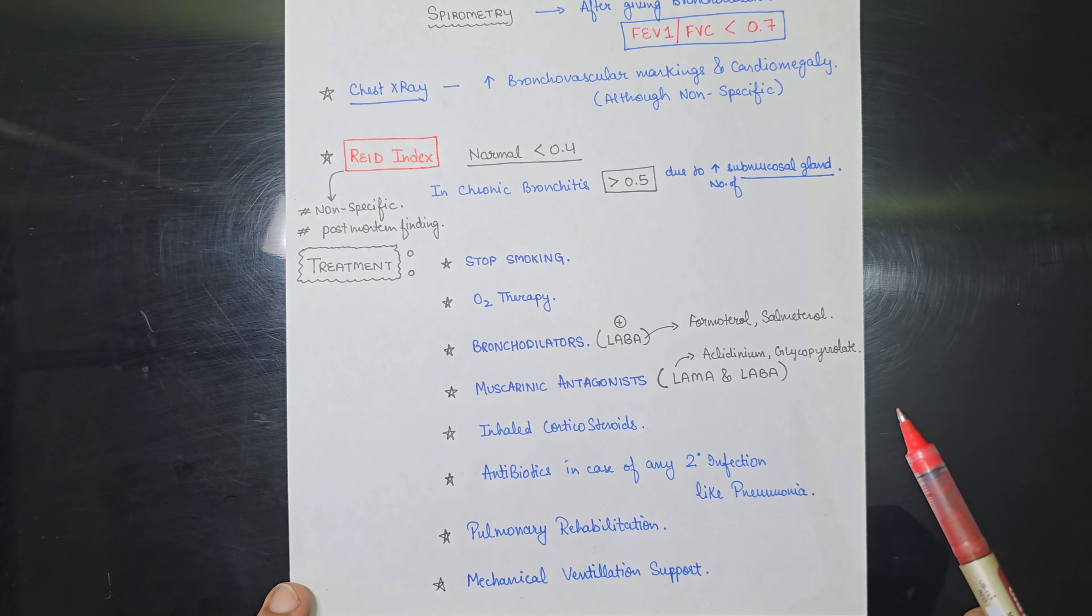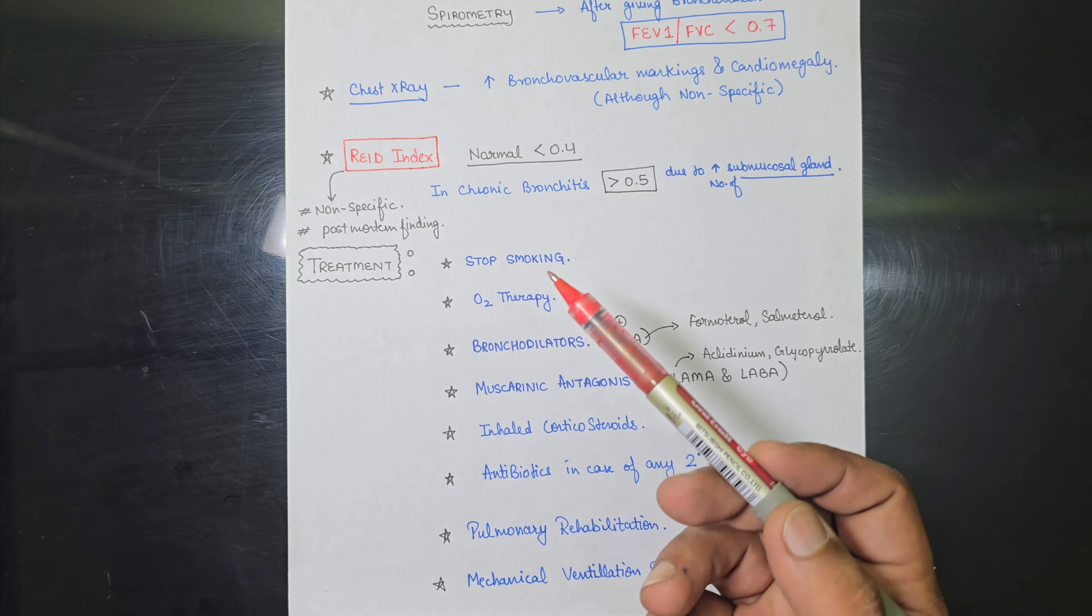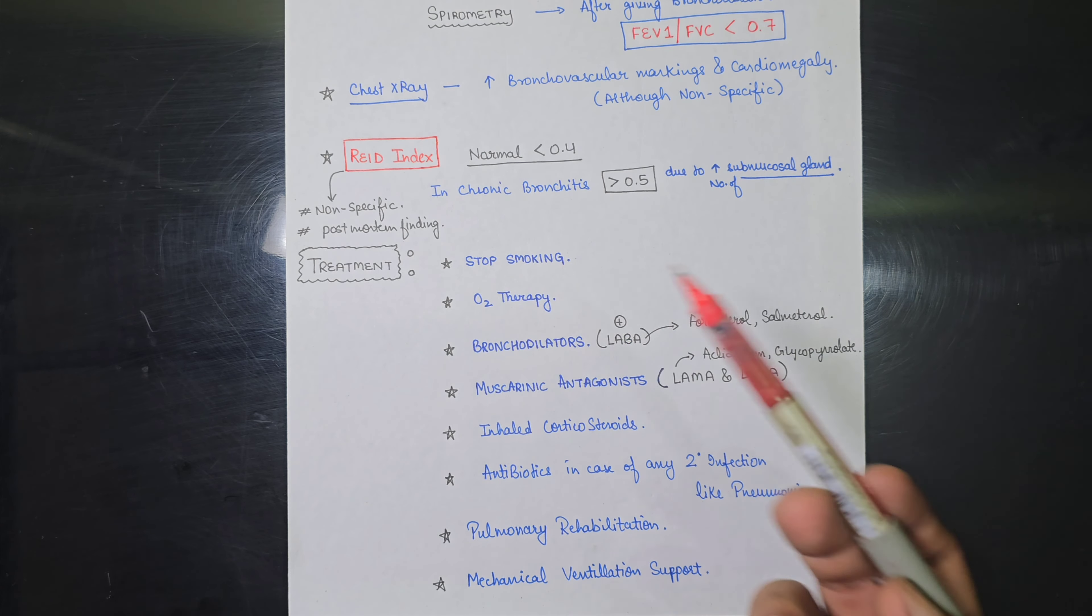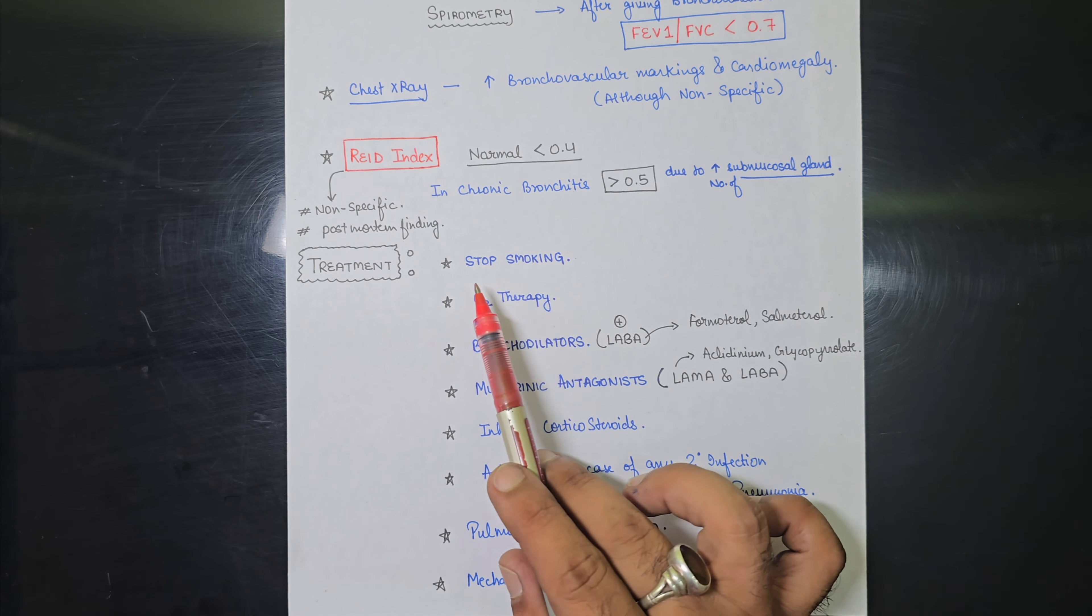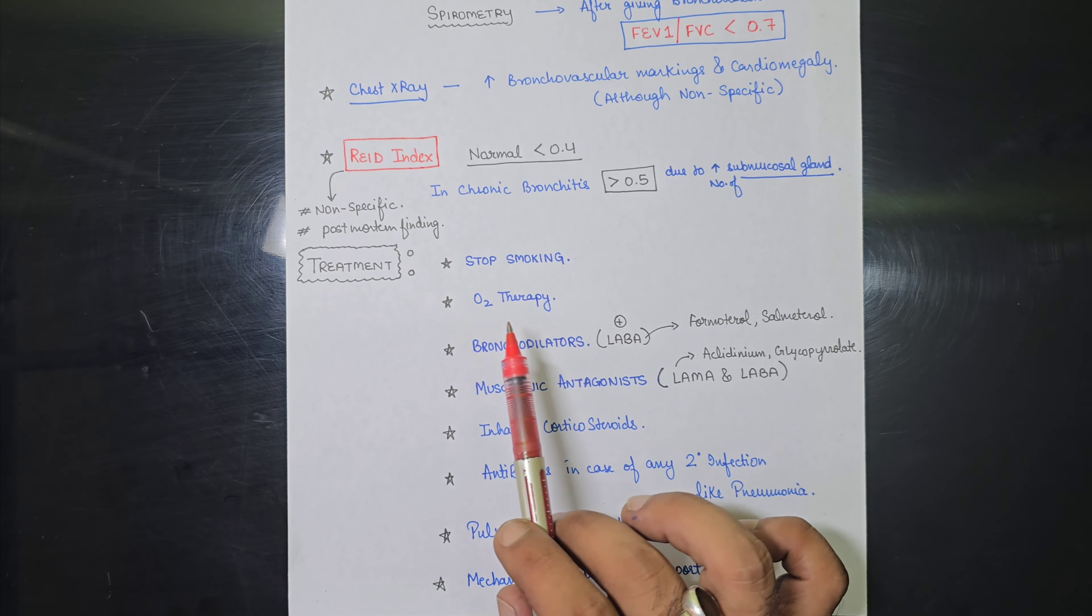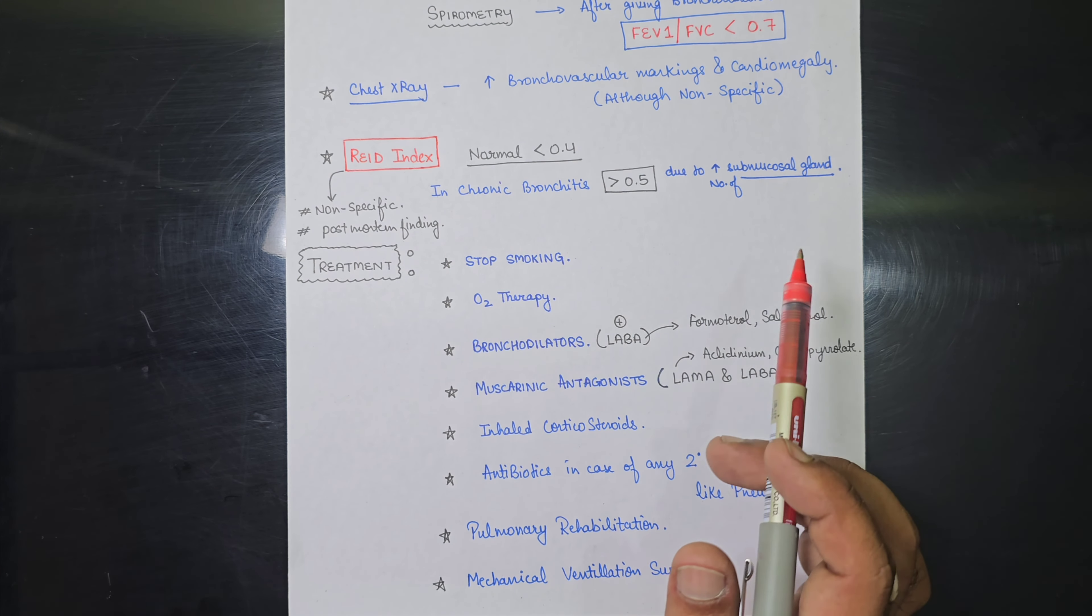Now we will look at the treatment of chronic bronchitis. As per treatment, first of all, we have to stop smoking. The most common thing that most of the patients will not do, but the most definitive treatment is first of all, stop smoking. Then we can give oxygen therapy to the patient.